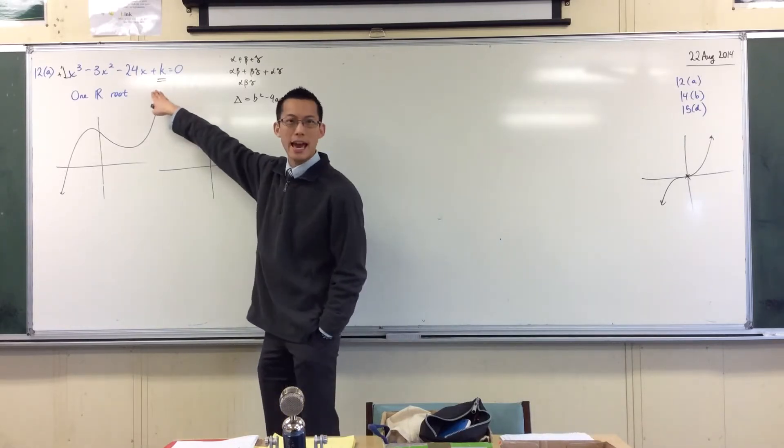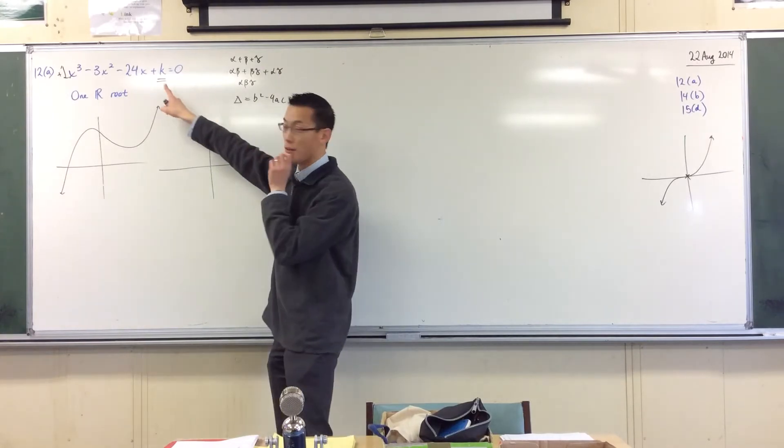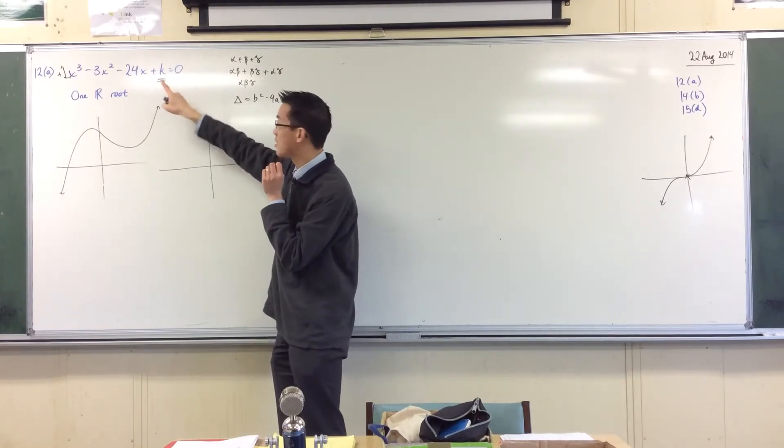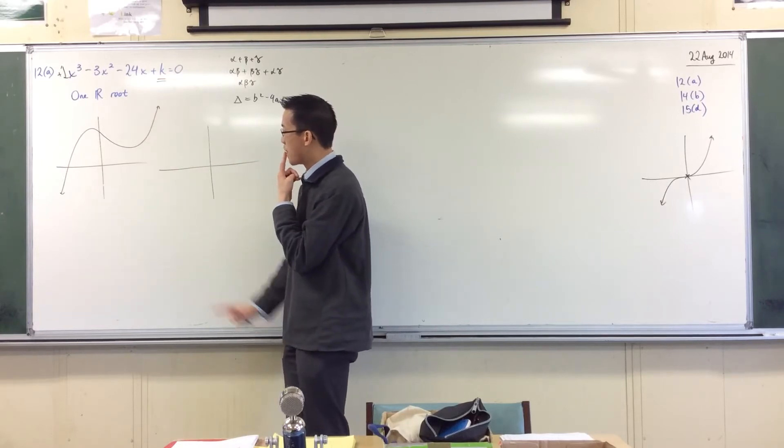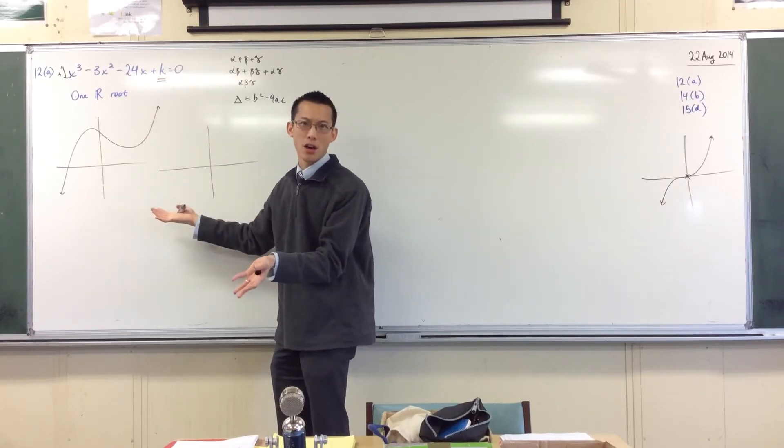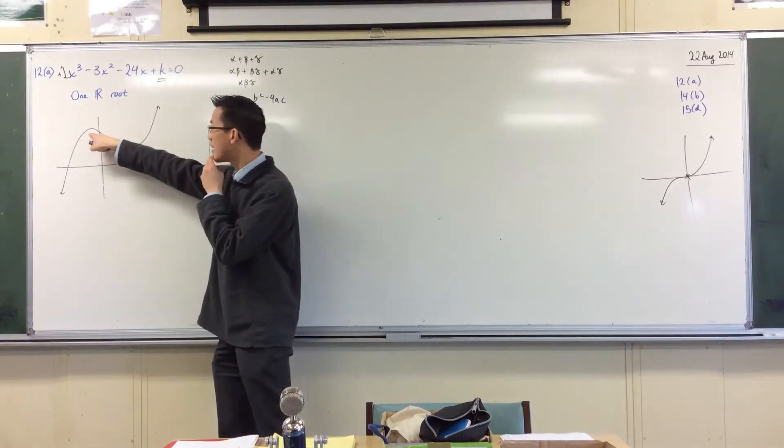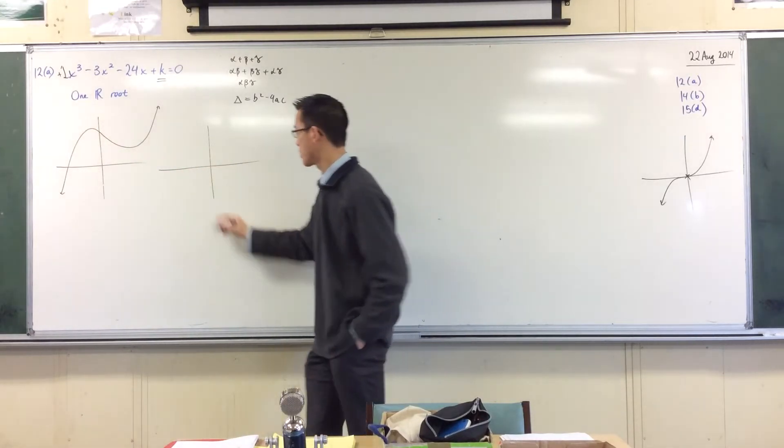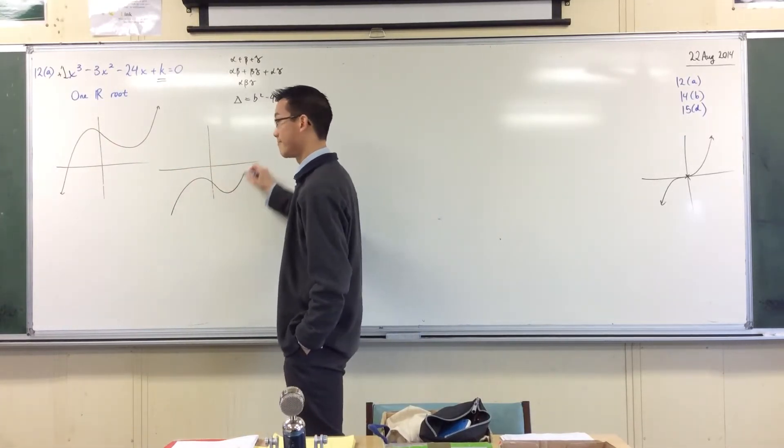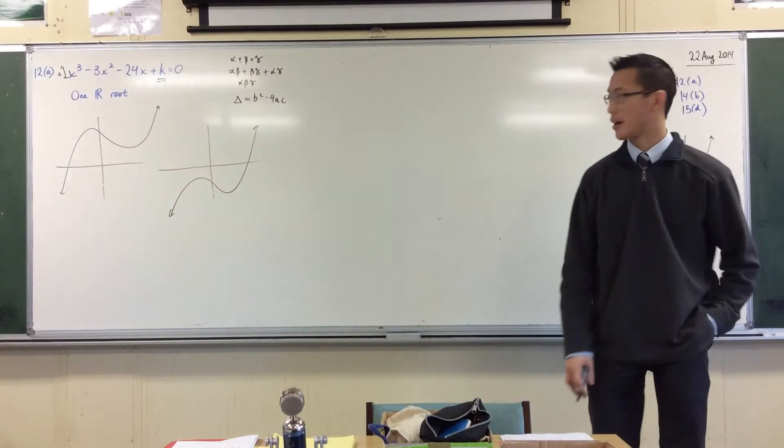How could I change this so it would be, because remember, what is this k? This k is just an up-down thing. It's our vertical constant. So, as I change this value, I shift up or I shift down. If I shift up, I just have the same kind of curve. If I shift down, if I shift far down enough so that both these stationary points are below the axis. Something like this. Then this also has one real root.